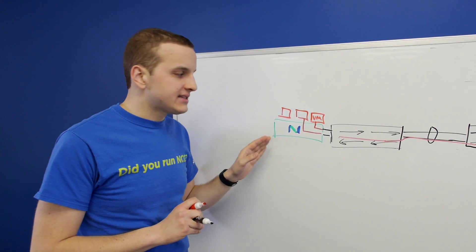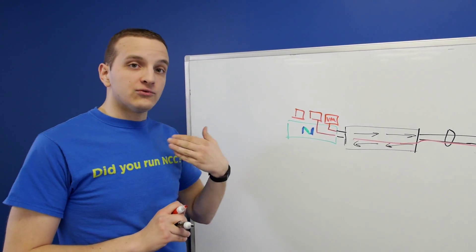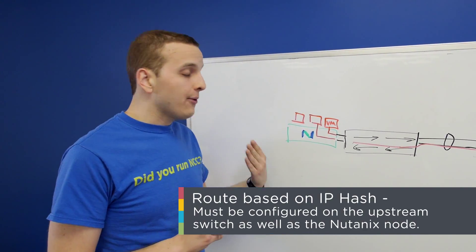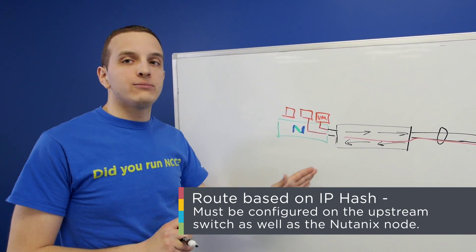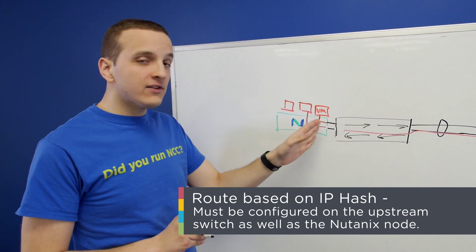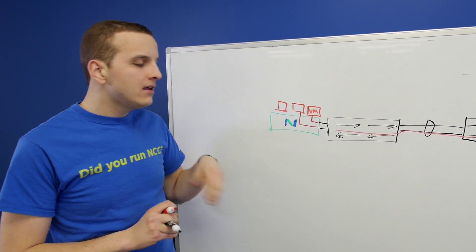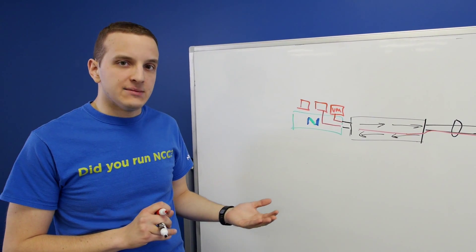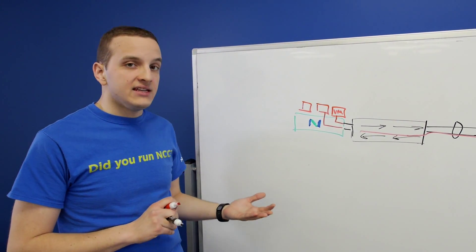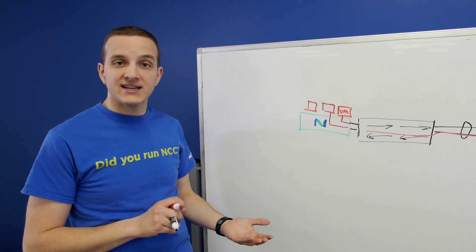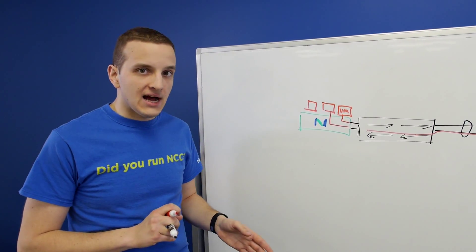ESXi also provides a mode called route based on IP hash. With that, you're doing basically a mode on port channel on the ESXi. So if you configure that on the switch, you've got to configure mode on on the upstream switch as well. ESXi also allows you to do LACP, but that requires you to have the distributed switch and the distributed switch license. So that's not always an option.